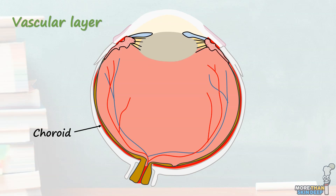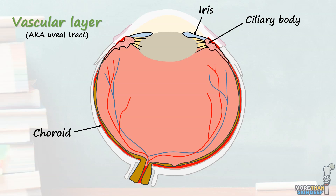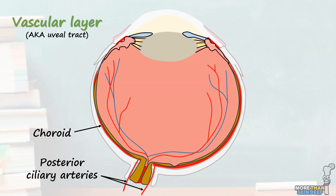The vascular layer is comprised of the choroid, ciliary body, and iris. This layer is also referred to as the uvea or uveal tract. The choroid is a highly vascular structure which lies between the outer sclera and inner retina. It runs from the optic nerve posteriorly to the ciliary body anteriorly. At the optic nerve, the choroid becomes continuous with the pia and arachnoid matter. Its rich blood supply comes from the long and short posterior ciliary arteries, which are branches of the ophthalmic artery. This blood supply also nourishes the outer layers of the retina.